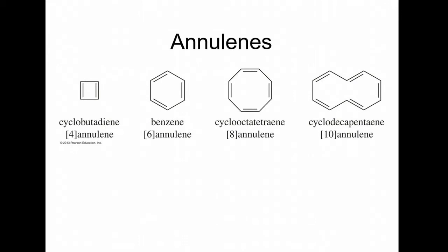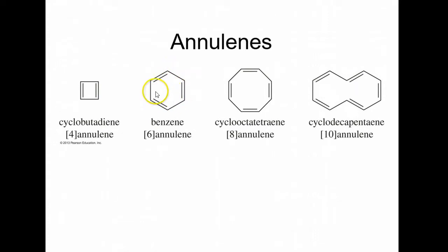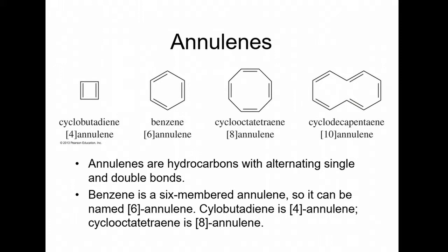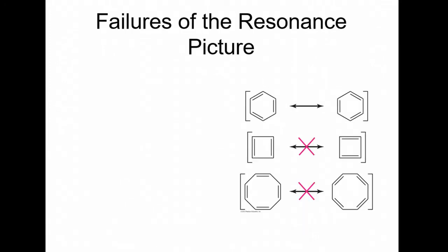Another name used is annulenes. Instead of saying aromatic or benzene, an annulene is basically these types of compounds where they're all carbons and they alternate double bond, single bond, double bond, single bond — these are conjugated systems. We learned about conjugation in the last chapter, and we're extending it into a cyclical structure. If you just had a straight chain, it's not considered an annulene or an aromatic compound because the pi electrons need to go around in a circle. An annulene is any carbon-hydrogen ring that is conjugated — four-annulene has four carbons, six-annulene has six, eight-annulene, ten-annulene, and so forth. Annulenes are hydrocarbons with alternating single and double bonds. Benzene is a six-membered annulene, and cyclobutadiene is a four-annulene.